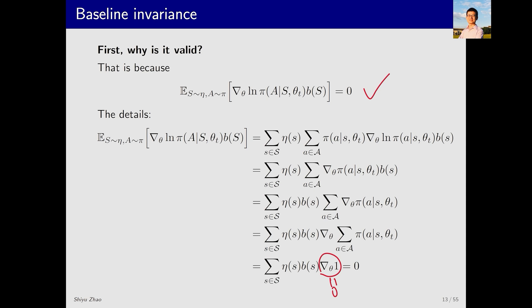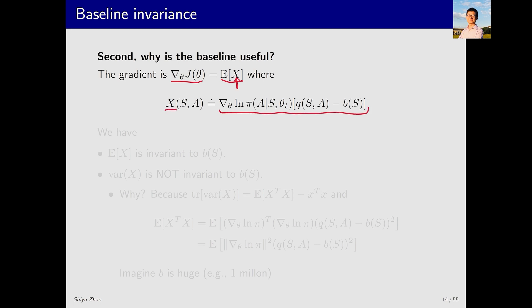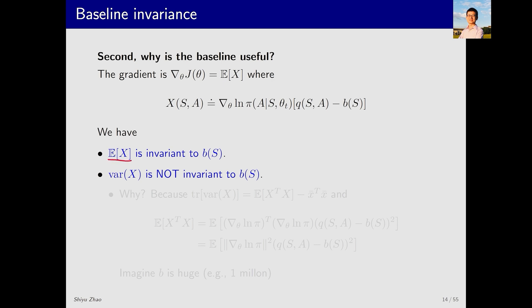This explains why introducing a new baseline function B does not change the gradient. Now, let's answer the second question: why do we need to consider this baseline and what is its purpose? This is the gradient we derived earlier, which equals an expectation. We can write the entire expression inside the brackets as a new variable X. We already know that E[X] is invariant to the baseline B(S). However, the variance of X, denoted as VAR, is influenced by B. Different choices for B can lead to different variances.